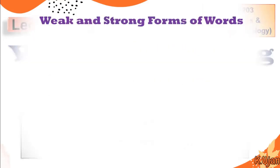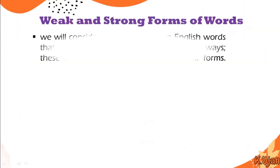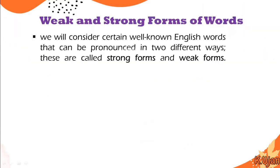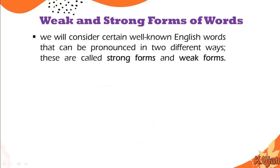Without further ado, let's talk about its definition. We will consider certain well-known English words that can be pronounced in two different ways. These are called strong forms and weak forms. So mostly when we are talking about pronunciations, we talk about these two forms — strong forms and weak forms.